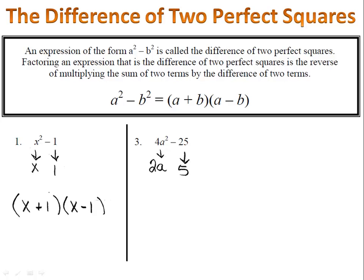Now all you have to do is write your set of parentheses, 2a plus 5, 2a minus 5.